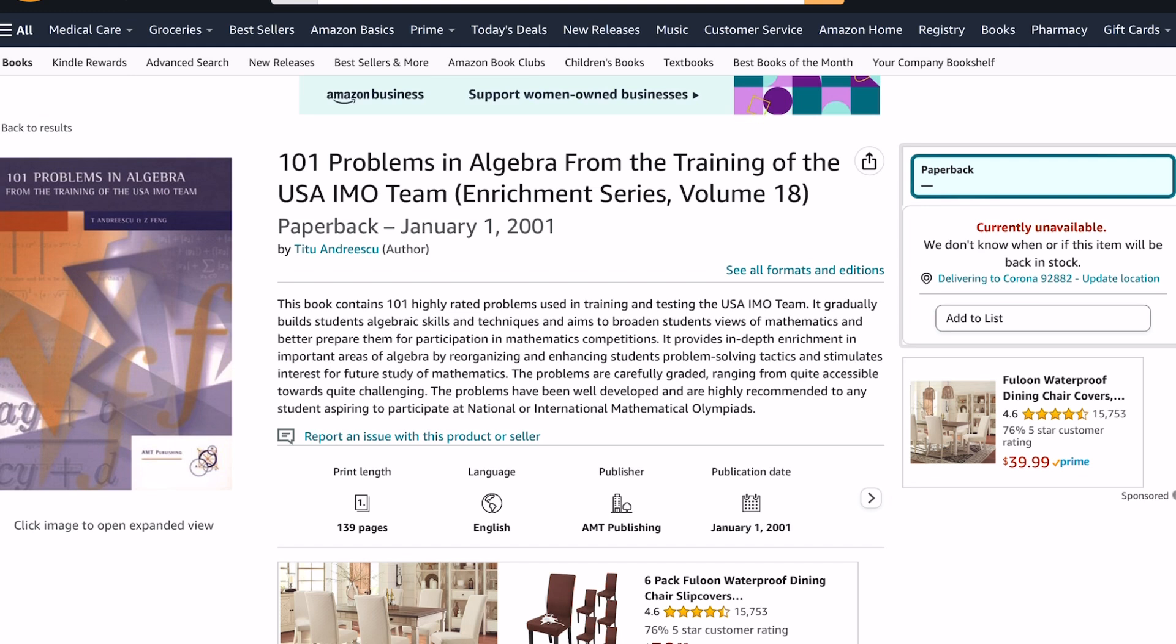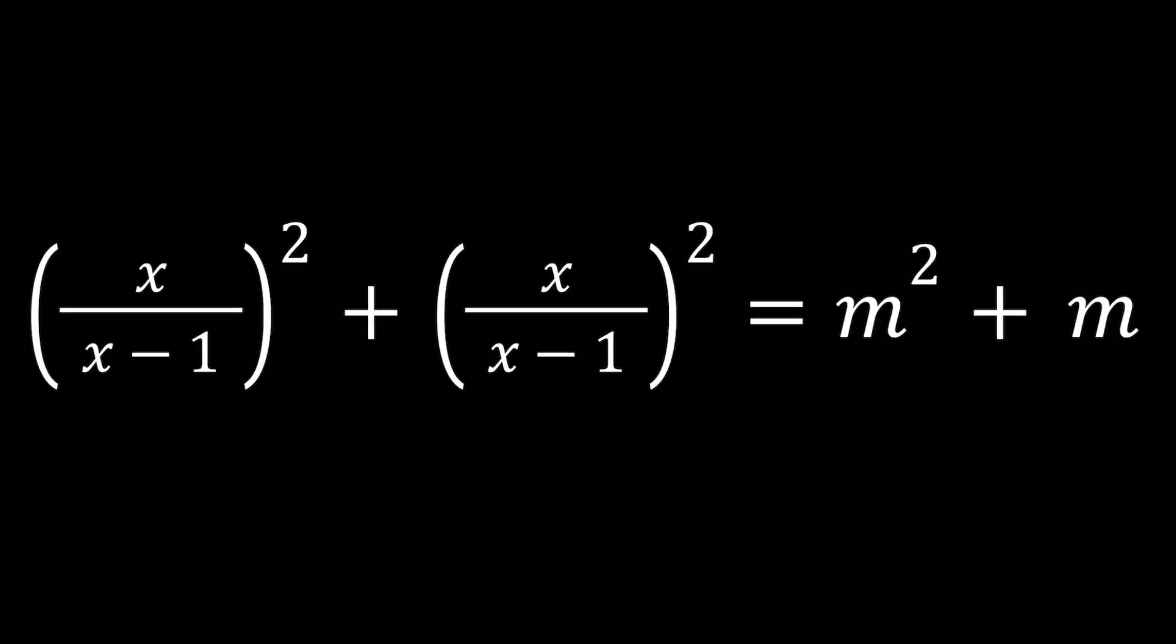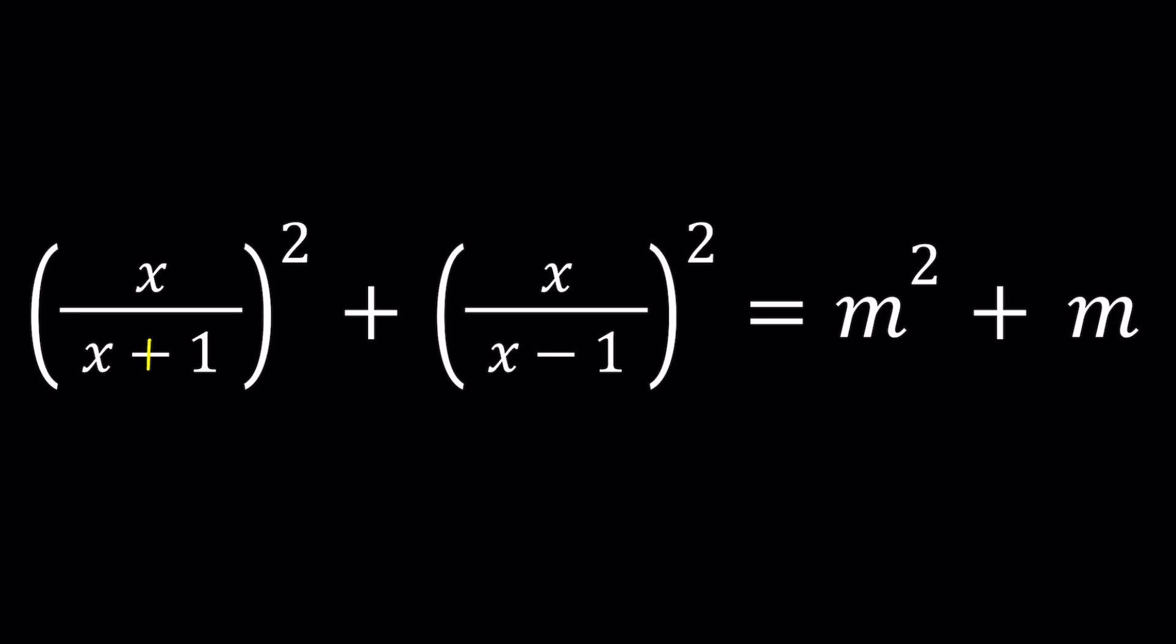IMO is the International Math Olympiad, which is a nine-hour test just like the USAMO. Let's go ahead and take a look at this problem and see how we can solve it. So we have this equation: x over x plus one squared plus x over x minus one squared equals m squared plus m. By the way, I apologize, the first one should be a plus sign.